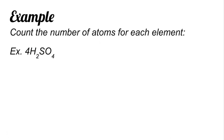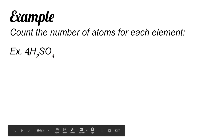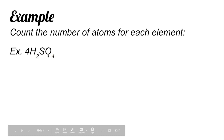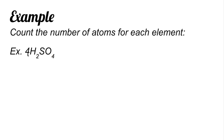Now let's look at this example: count the number of atoms for each element. You have a coefficient of 4, then H2SO4 — sulfuric acid. This is read as 4 molecules of sulfuric acid. We start with hydrogen. How many atoms of hydrogen do we have? We have a subscript of 2, which is applied to hydrogen, and a coefficient of 4. So for hydrogen, that would be 4 multiplied by 2, giving us 8 atoms of hydrogen.